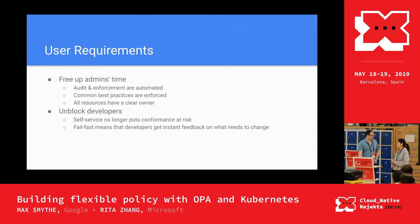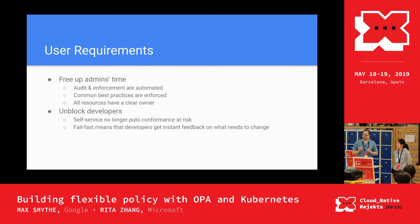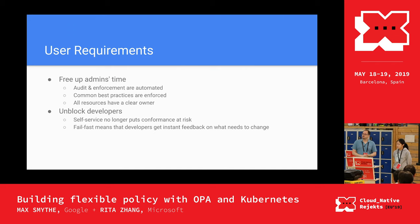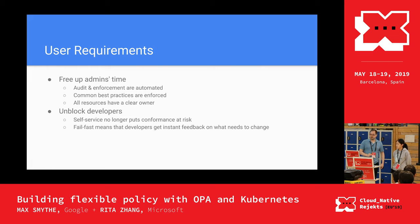So how do we make them happier? We have two very angry groups. The majority of the admin's time is spent enforcing policy; the developers are waiting on policy — it's kind of a black box to them. If we can automate enforcement, we free up a lot of admin time and we can make sure that best practices are more uniformly enforced, and ensure all resources have a clear owner so when violations are detected, we can more easily resolve them. If enforcement is automatic, self-service is no longer as risky to compliance. And if the error messages are instructive, developers can learn by failure or fast iteration.